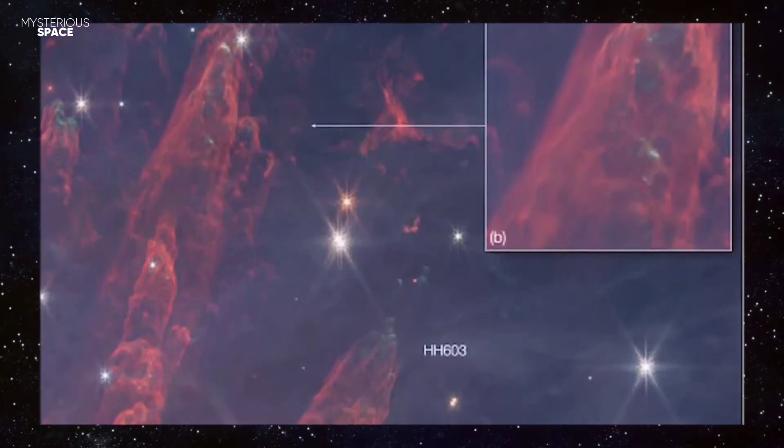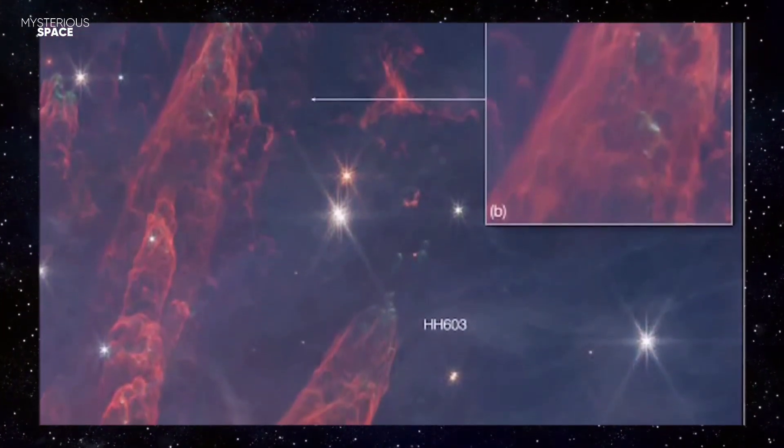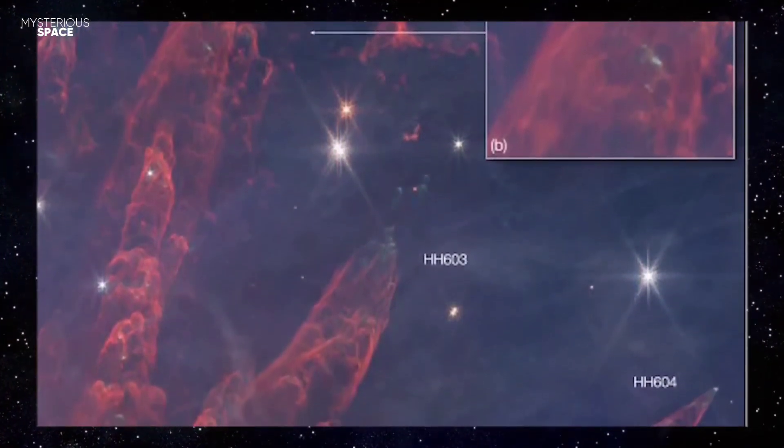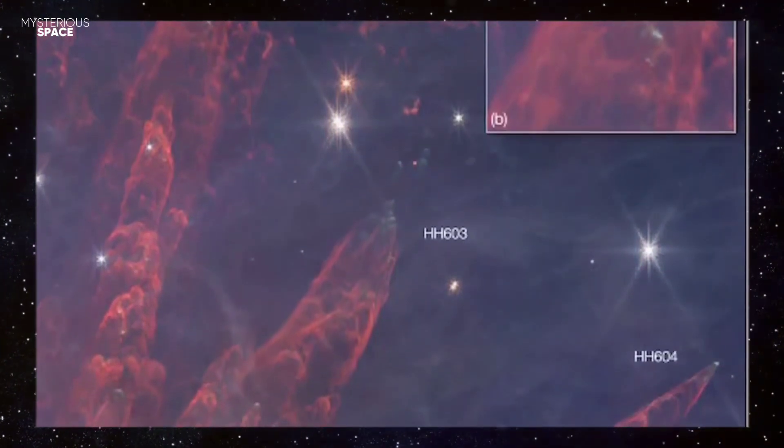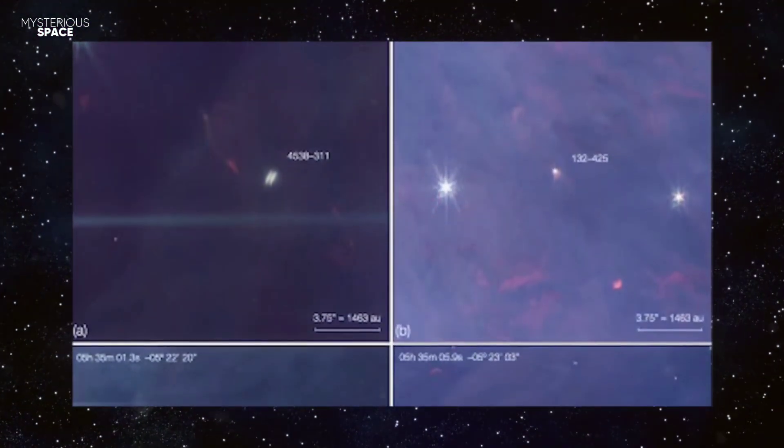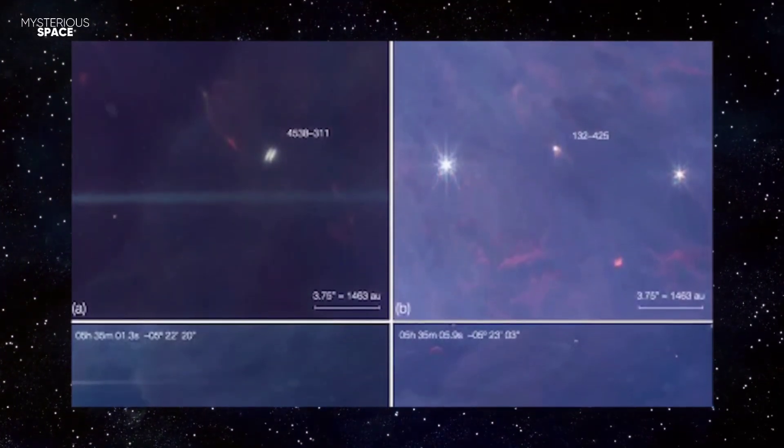So there you have it, the James Webb Space Telescope surprising everyone. It's truly a machine of great discoveries, unexpected discoveries. Why didn't we see this before? Because we didn't have the technology to see it. The best we had was the Hubble.